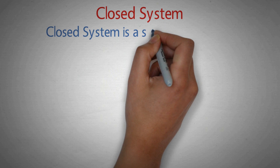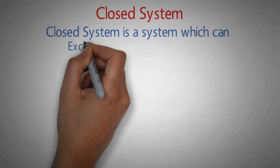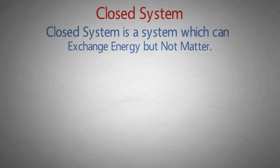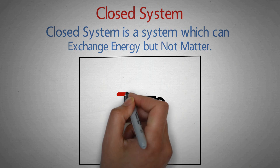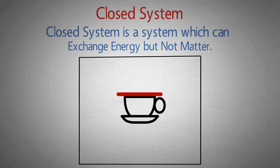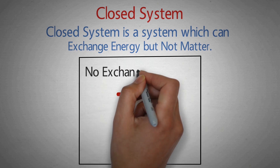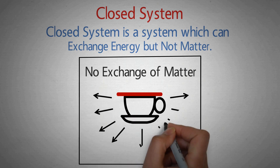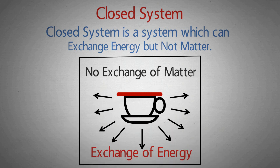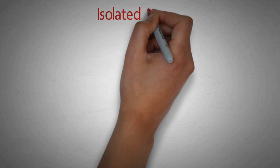Next is closed system. Closed system can exchange energy with the surrounding, but it cannot exchange matter. So इस coffee के cup पर अगर हमने lid डाल दिया, तो matter का surrounding के साथ कोई भी exchange नहीं होगा। But cup की wall और lid से energy radiation के form में release होती रहेगी। So this is a closed system — matter can't exchange but energy can.